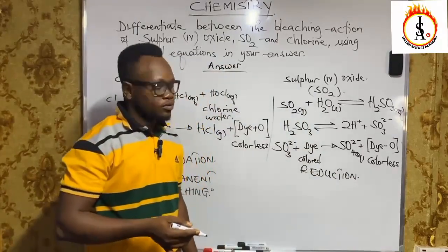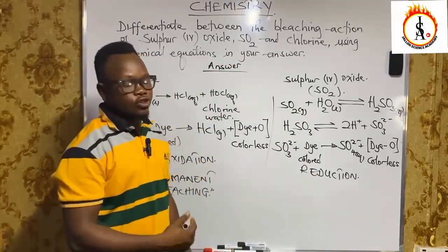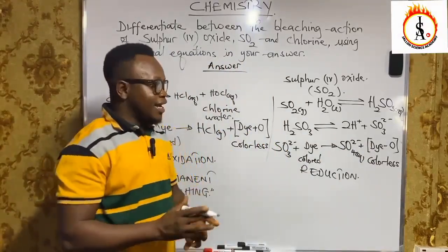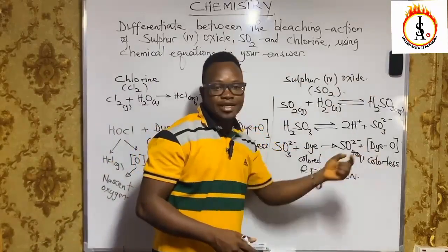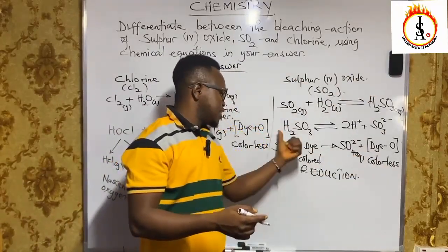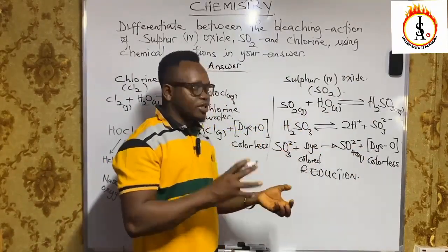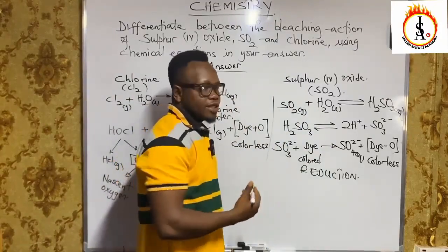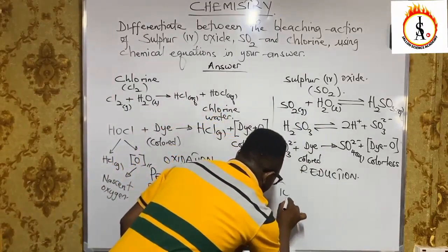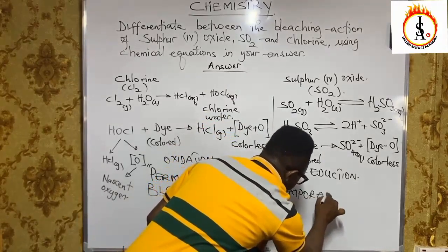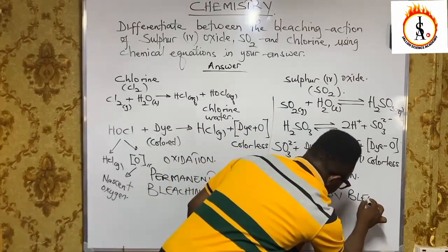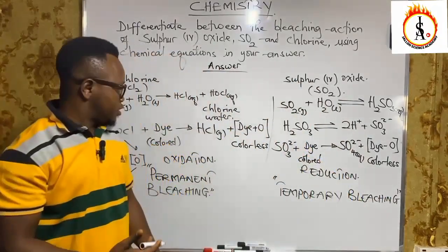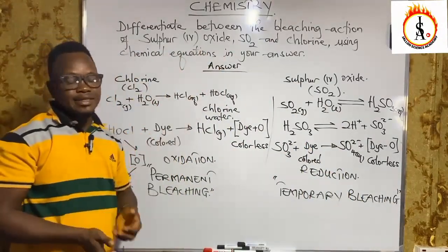This means of bleaching is a reduction method. Being a reduction method, if the colorless material is brought into the atmosphere and reacts with atmospheric oxygen, it will regain its color again — because it had lost oxygen, and re-exposure to atmospheric oxygen restores it. This makes the bleaching action of sulfur dioxide temporary, so we refer to it as a temporary bleaching method.